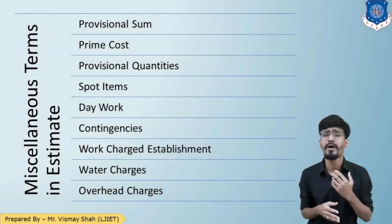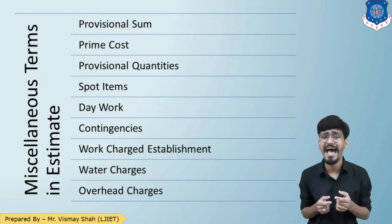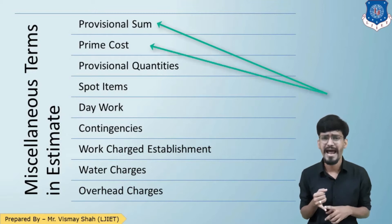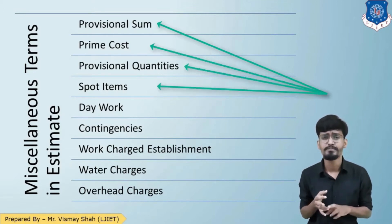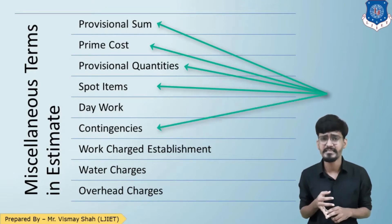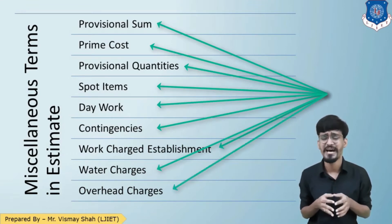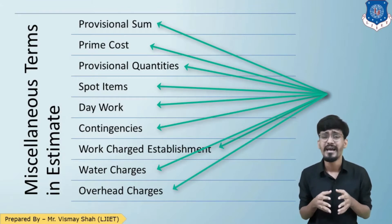We are going to understand these nine terminologies which include: provisional sum, prime cost, provisional quantities, spot items, contingencies, work charge establishment, day work, water charges, and overhead charges.